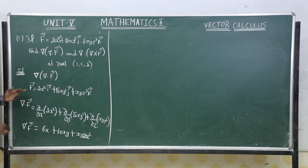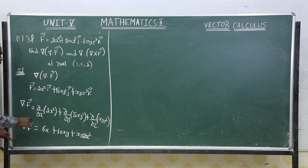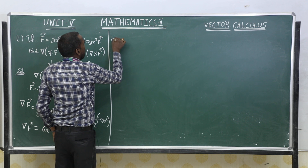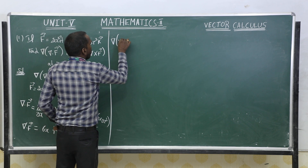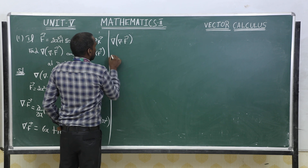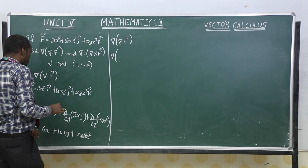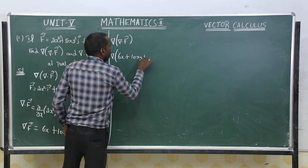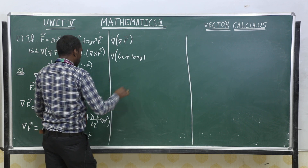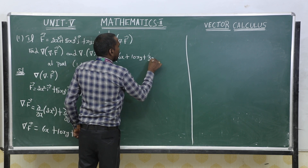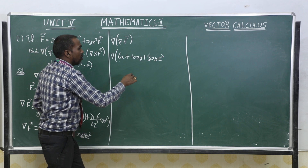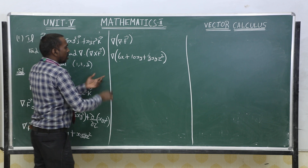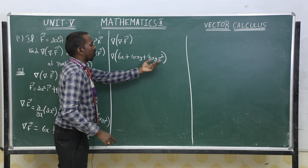Now I can find delta of del dot F vector, which is the gradient of the scalar function. So we have to find the gradient of the function 6x plus 10xy plus 3xyz². We must differentiate this with respect to x, y, and z.